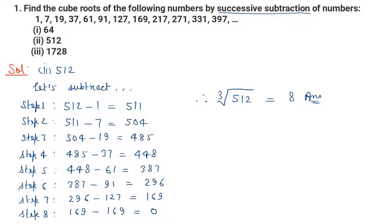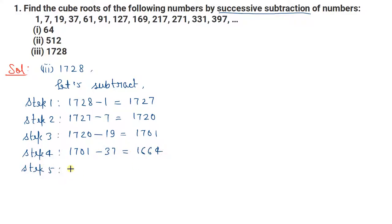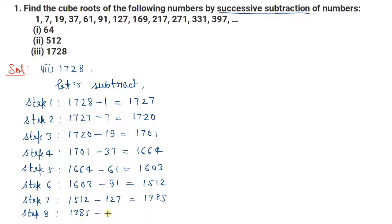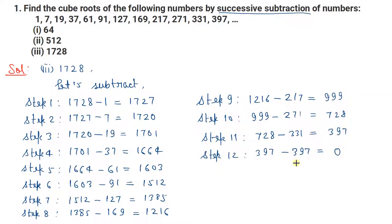Now the third part — let us find the cube root of 1728. Successively subtract करने पर finally zero आ चुका है। यह 12th step में zero आया है। So cube root of 1728 is equal to 12, क्योंकि 12 steps में successively subtract करने पर zero आ रहा है।